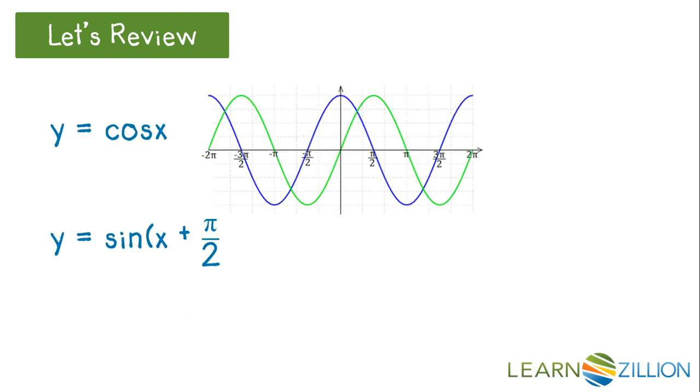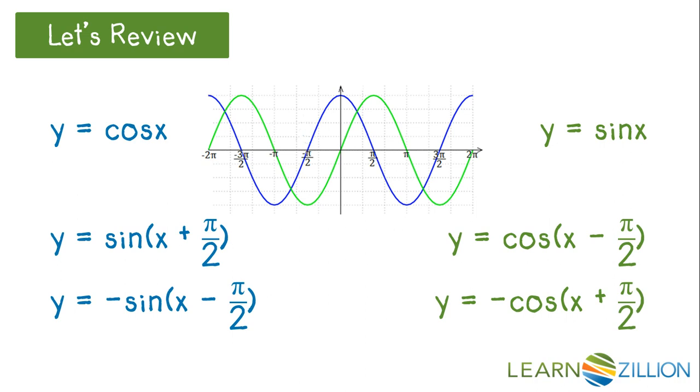Any sinusoidal graph can be written or modeled as either sine or cosine. So there is more than one correct equation for each graph. Here are three different ways to model the blue graph and three different ways to model the green graph. The choice of sine or cosine and which wave pattern we choose to be the start of the wave determines what value H is. Y equals K is the equation of the midline of the wave.